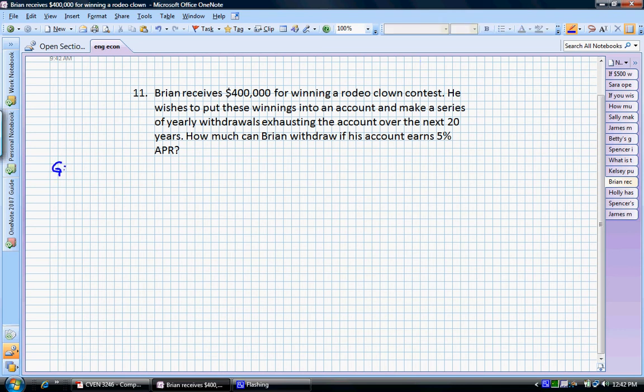So let's write what we're given in this problem. We know that Brian receives some present sum right now of $400,000.